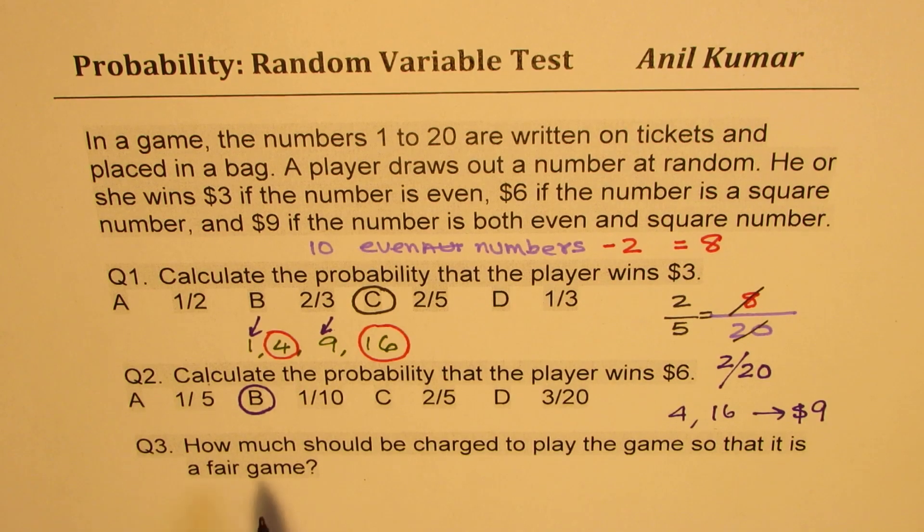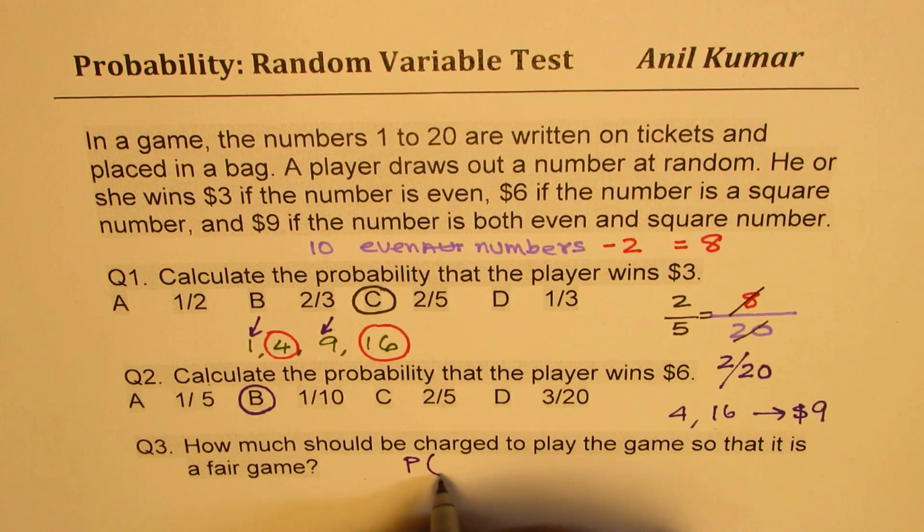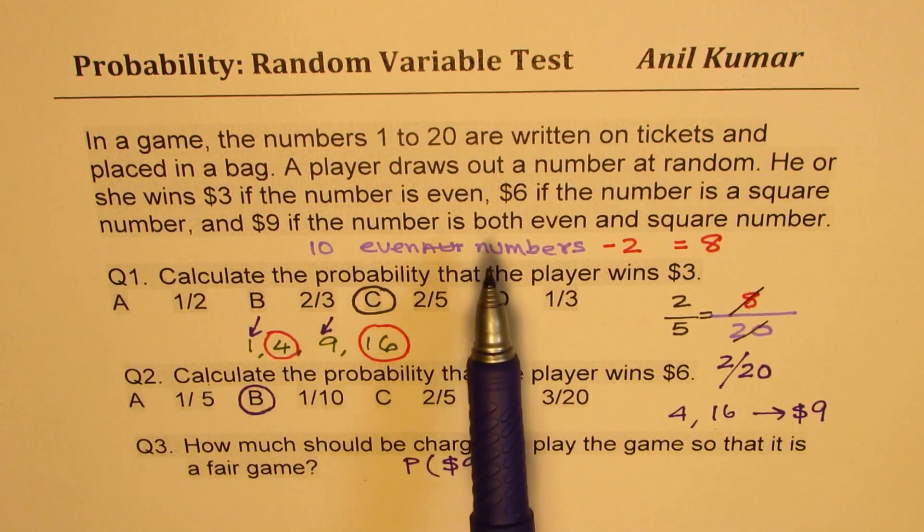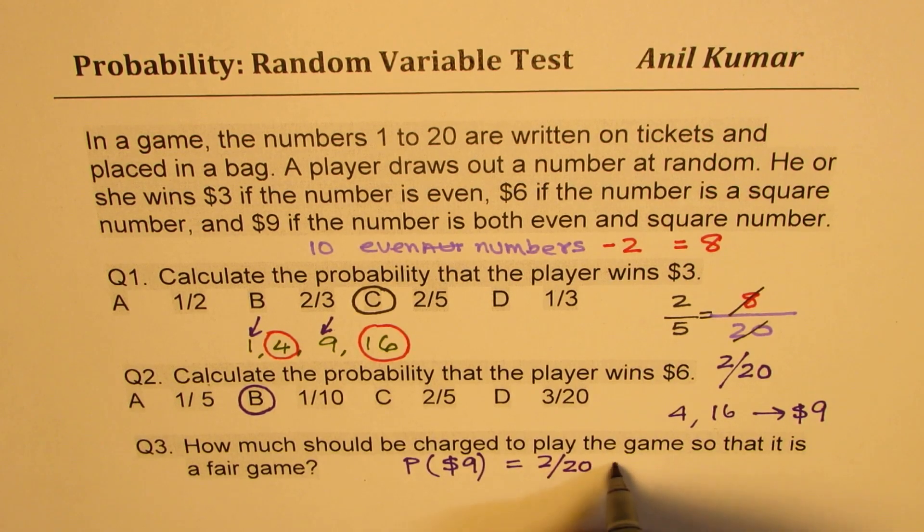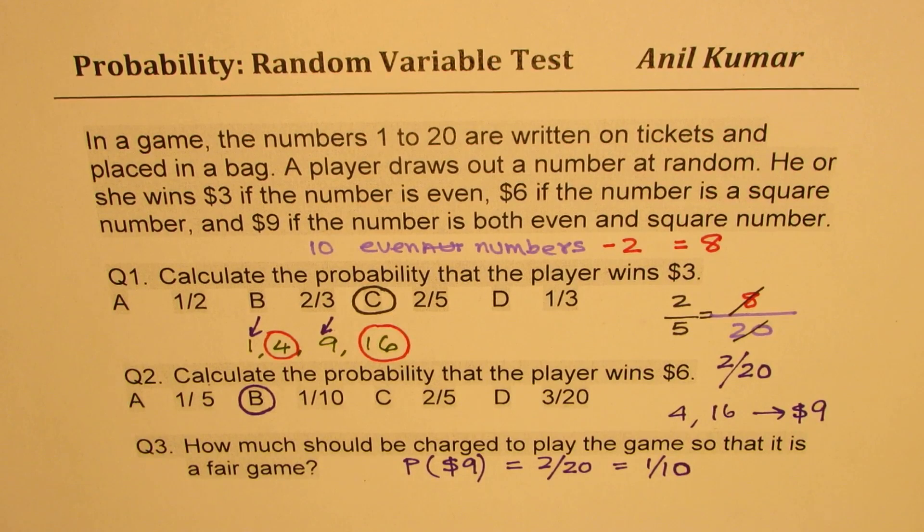Now, question number 3 here is: how much should be charged to play the game so that it is a fair game? Now, before getting into this, let us also find the probability of getting $9. To get $9, the number should be both even and square. That means we are looking for 4 and 16. 2 out of 20, so it is 2 out of 20 or 1 out of 10. Now, we know the probability of winning $3, $6, and $9. From this information, we can find the fair cost of the game. So now you solve question number 3. We'll take a small break and then get back to its solution.